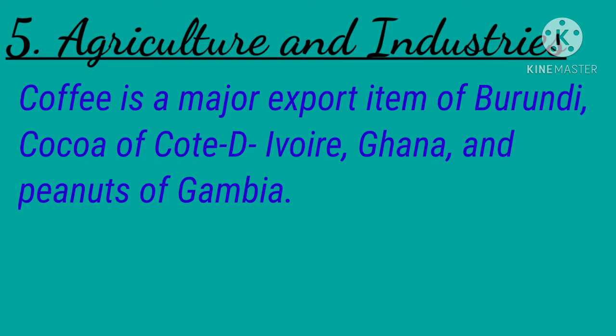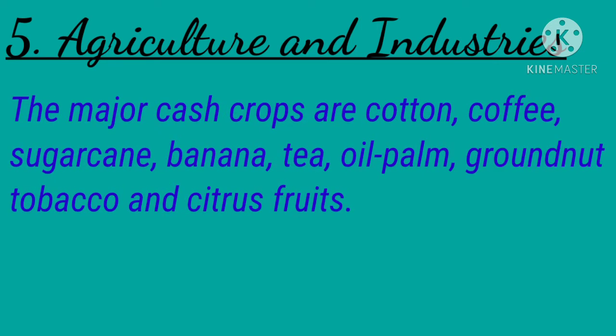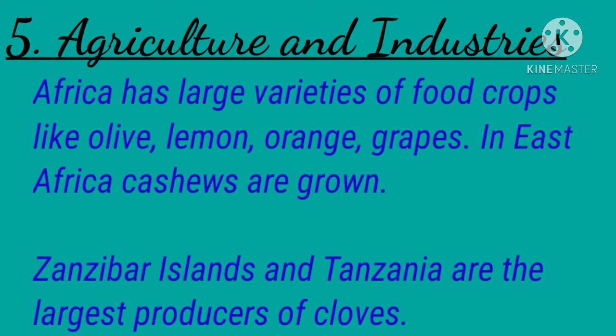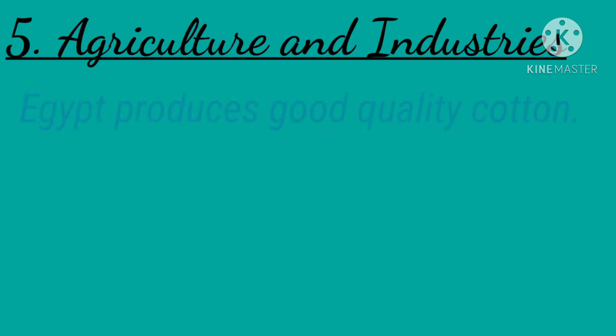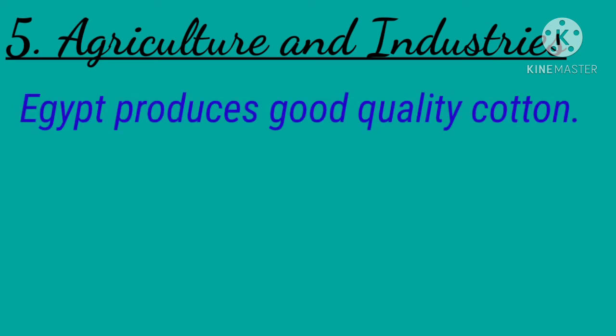Coffee is a major export item of Burundi, cocoa of Côte d'Ivoire and Ghana, and peanuts of Gambia. Major cash crops include cotton, coffee, sugarcane, banana, tea, oil palm, groundnut, tobacco, and citrus fruits. Africa also has a variety of food crops like olives, lemons, oranges, and grapes. Zanzibar Islands and Tanzania are the largest producers of cloves, and Egypt produces good quality cotton.